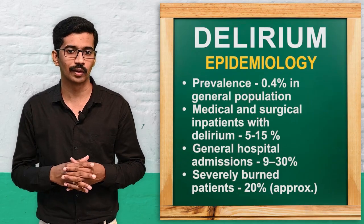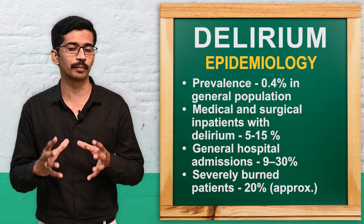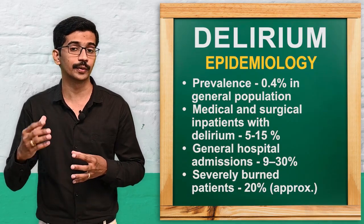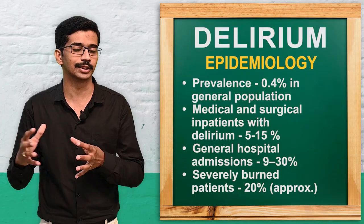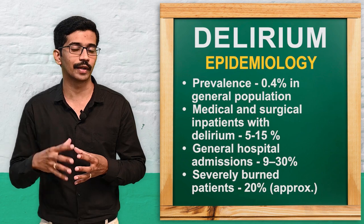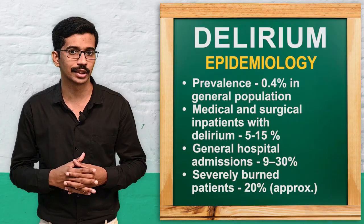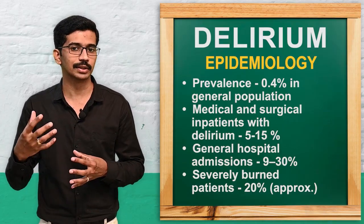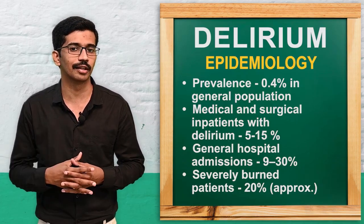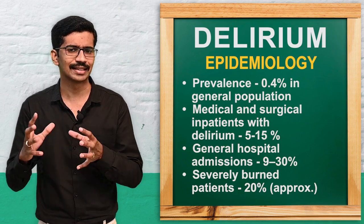Coming to the epidemiology, in the general population 0.4% of people may be affected with delirium, and 5 to 10% of medical and surgical patients may develop delirium. From the total admissions in a clinical setting, 9 to 30% may develop delirium. In severely burned patients, approximately 20% may develop delirium. Delirium is very common in the clinical setting.